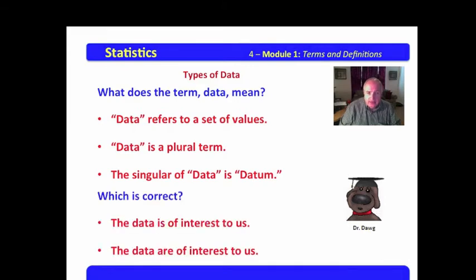Now, which of the following is correct? The data is of interest to us, or the data are of interest to us? Now, the quick way to solve that is just replace the word data with a word that you obviously know is plural. Let's use the word elephants. Now, let's say it this way: the elephants is of interest to us, the elephants are of interest to us. Which of those is correct? Absolutely the latter one. The data are of interest to us.